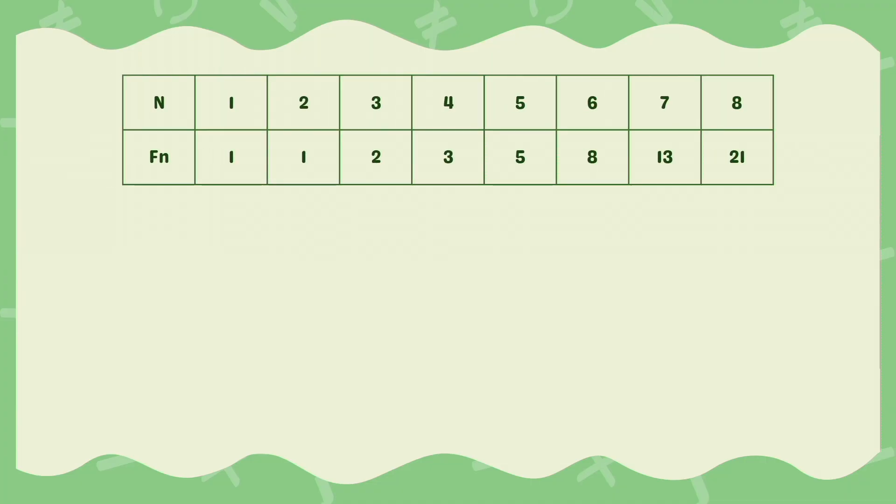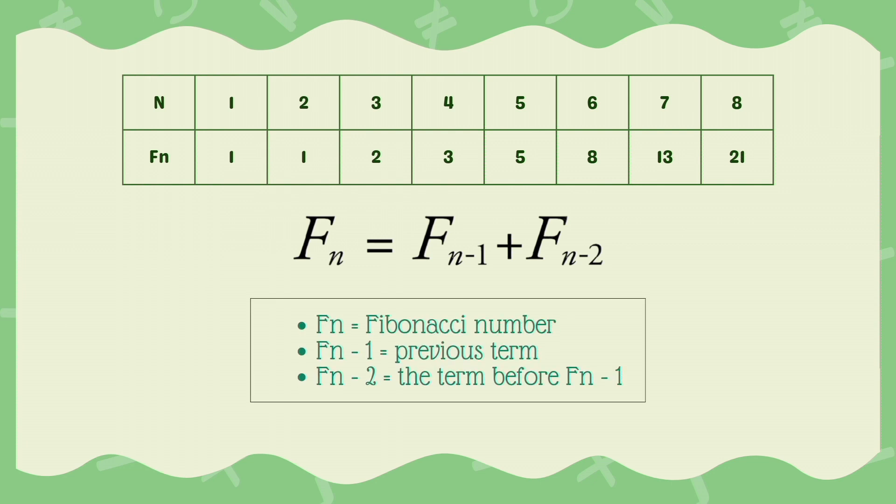How does Fibonacci sequence work? The Fibonacci sequence works using this formula. Fn is equals to Fn-1 plus Fn-2, where Fn is the Fibonacci number, then Fn-1 is the previous term, then Fn-2 is the term before Fn-1. In simple terms, to get the Fibonacci number, we're just going to add the 2 previous terms.